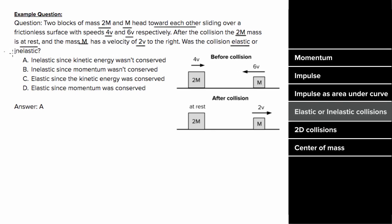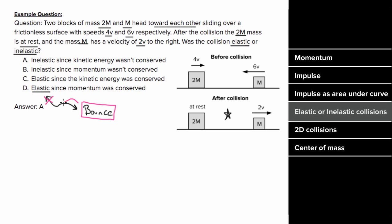Now you might want to say that since these objects bounced off of each other, the collision has to be elastic, but that's not true. If the collision is elastic, then the objects must bounce, but just because the objects bounce does not mean the collision is elastic. In other words, bouncing is a necessary condition for the collision to be elastic, but it isn't sufficient.